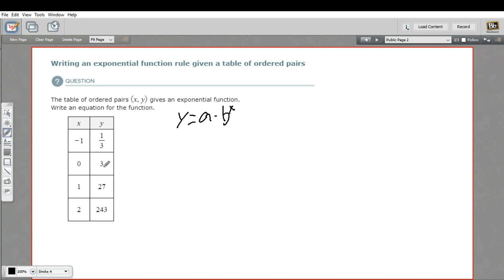To do that, I'm going to look for the point where x equals 0. That's a pretty useful point to have in any table of values like this. And then we can plug in the x and the y values and see what that gets us.